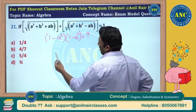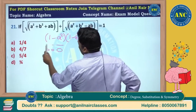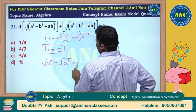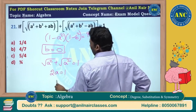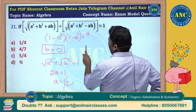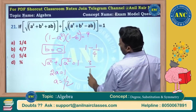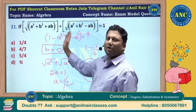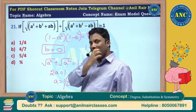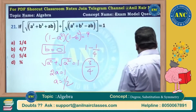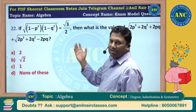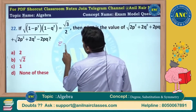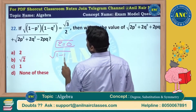Simple equation — make one variable 0. If I make b = 0: root(a²) + root(a²) = 1, so 2a = 1, a = 1/2. Then 1 - a² = 1 - 1/4 = 3/4. The answer is 3/4. This is a very easy way to solve this question. The same approach applies to root of (1 - p²)(1 - q²): make q = 0.